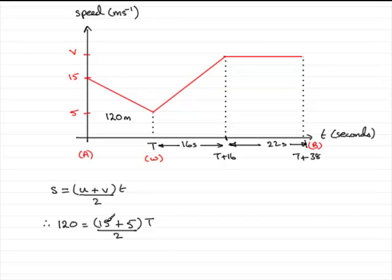So we've got 15 plus 5, which is 20. 20 divided by 2 is 10, so we've got 120 equals 10T. And if I divide both sides by 10, we've got that big T equals 12.